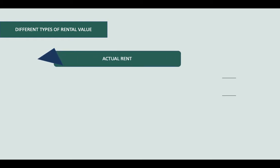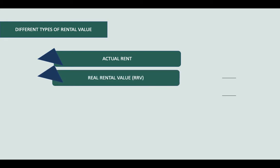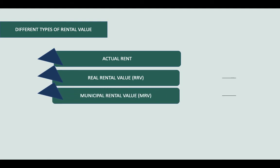We are supposed to calculate tax only for the annual value. To determine the annual value there are several types of rental value. The first is actual rent — the rent actually received from the tenant for the let-out period. Real rental value is calculated from actual rent by deducting amounts collected for common facilities like staircase lighting, corridor maintenance, gardening, water charges, and electricity charges.